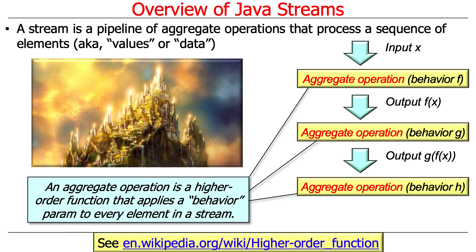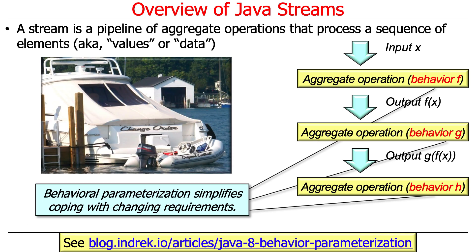An aggregate operation is a so-called higher-order function that applies a behavior parameter to every element in a stream. A higher-order function is just a fancy way of saying a function that takes a function or returns a function. Aggregate operations are joined together so the output of one becomes the input into the next. One of the things passed in as a parameter is called the behavior, which enables behavior parameterization — making it easier to cope with changing requirements. You can change what the computations do while the overall structure of the stream remains very similar.